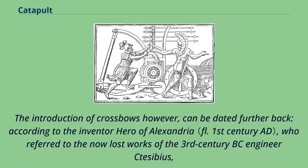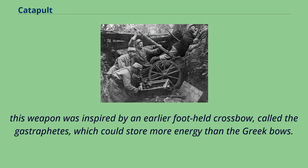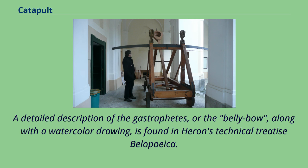The introduction of crossbows can be dated further back, according to the inventor Hero of Alexandria, who referred to the now-lost works of the 3rd century BC engineer Tesavius. This weapon was inspired by an earlier foot-held crossbow called the gastrophetes, which could store more energy than the Greek bows. A detailed description of the gastrophetes, or the belly bow, along with a watercolor drawing, is found in Heron's technical treatise Belopika.